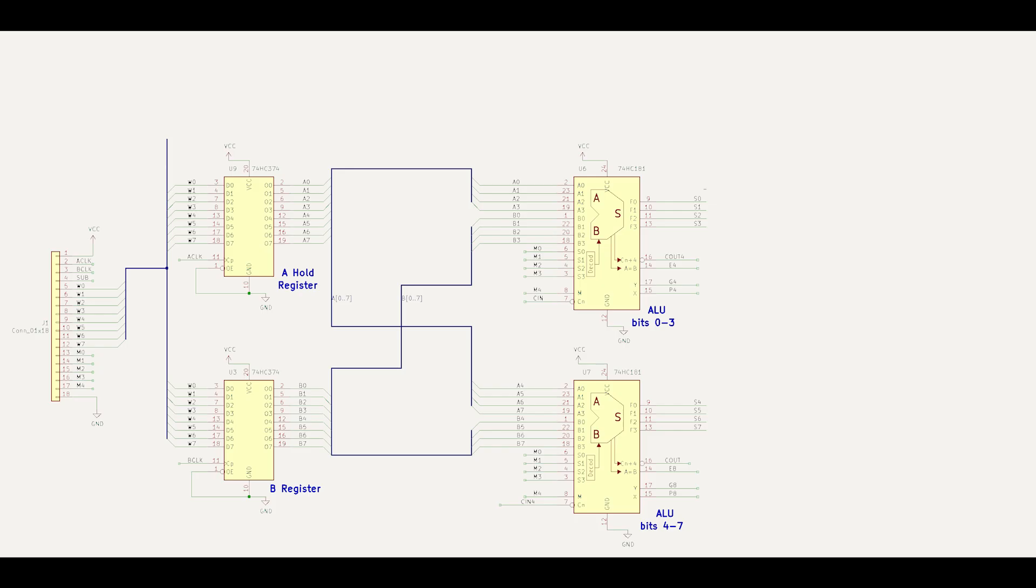The 74HC181 only operates on 4 bits at a time, so we need two of them to form an 8-bit ALU. Remember that the lower 4 bits from A hold need to go to one of the ALU chips, while the upper 4 bits need to go to another ALU chip. Similarly, 4 bits from the B register go to one ALU chip, while the other 4 bits go to the other ALU chip, so that's why there's this unusual crossover in the middle of the schematic.